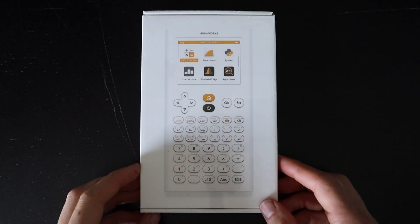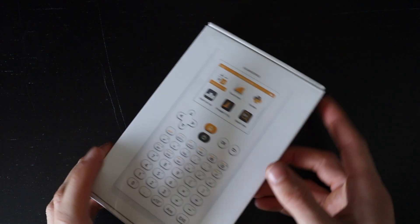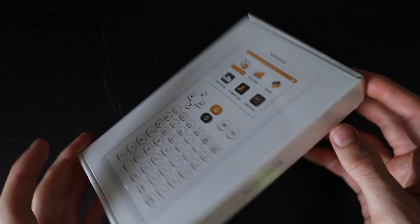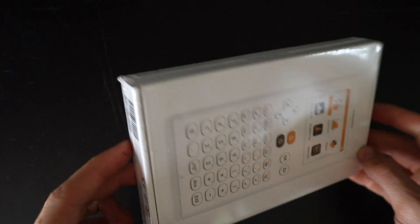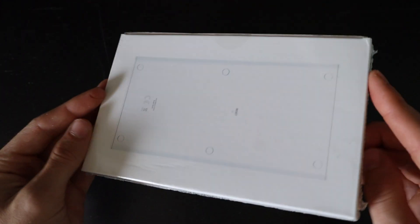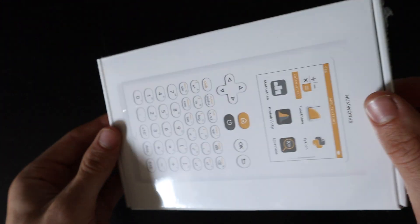Hello everyone, this is going to be an unboxing and review of the NumWorks graphing calculator. Straight from Amazon, $99, it comes in this very sleek, pretty looking box. It's very nice to not have to deal with the old type of packaging.